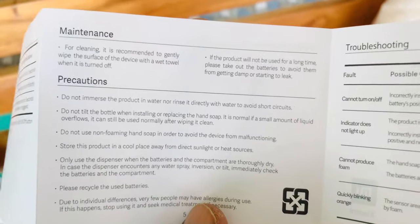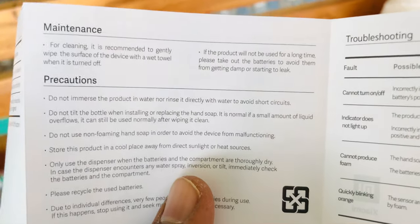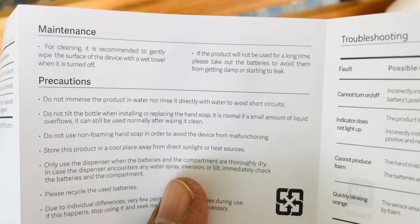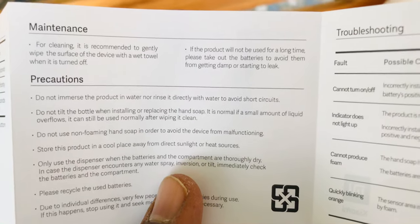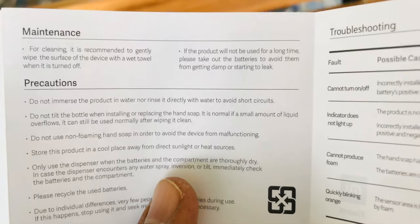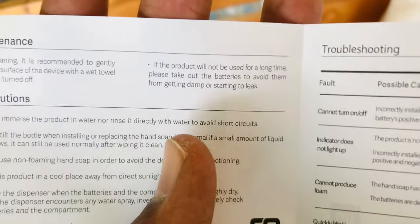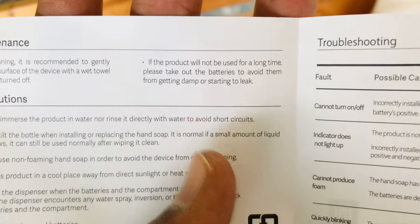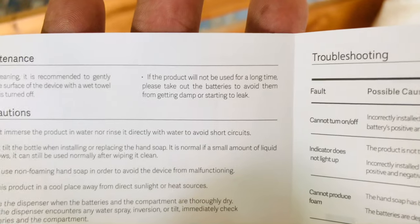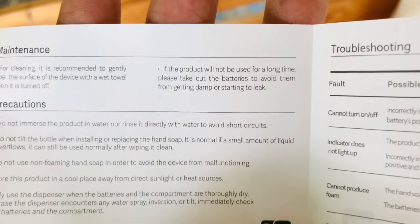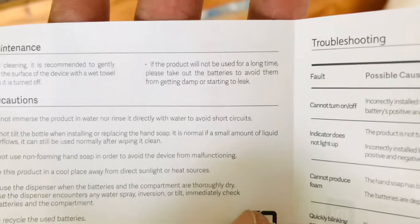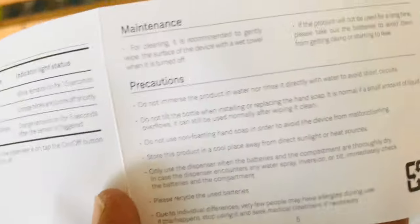For maintenance, they recommend gently wiping the surface with a damp towel when it's turned off. If the product won't be used for a long time, please take out the batteries to avoid them getting damp or starting to leak. This is a great idea whenever we're not using it or going on vacation.